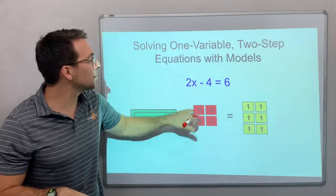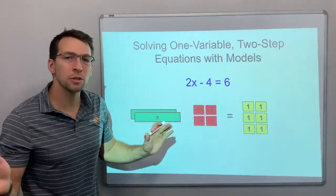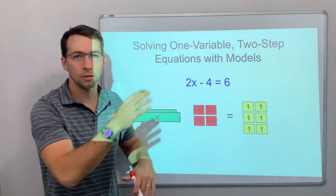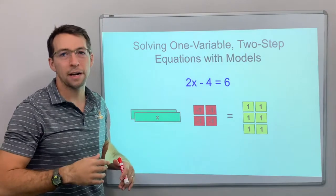2x minus 4 equals 6. So we add 4, add 4 to both sides, great. 2x equals 10, divide by 2, x equals 5.